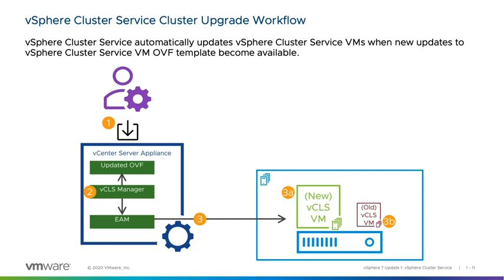A vSphere administrator updates or patches vCenter Server, and the update includes a new version of the vCLS VM OVF template. The vSphere Cluster Service Manager observes the new version and updates the EAM agency. EAM then initiates an upgrade of the vCLS VMs. A new vCLS VM is deployed using the new OVF template and powered on. The old vCLS VM is shut down and deleted. This process repeats until all vCLS VMs are replaced with the new versions.